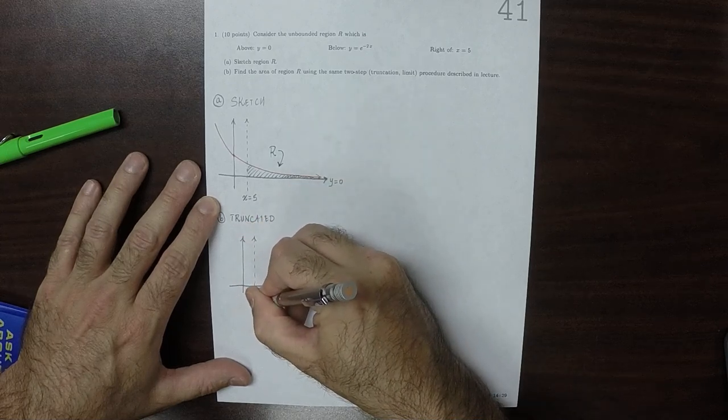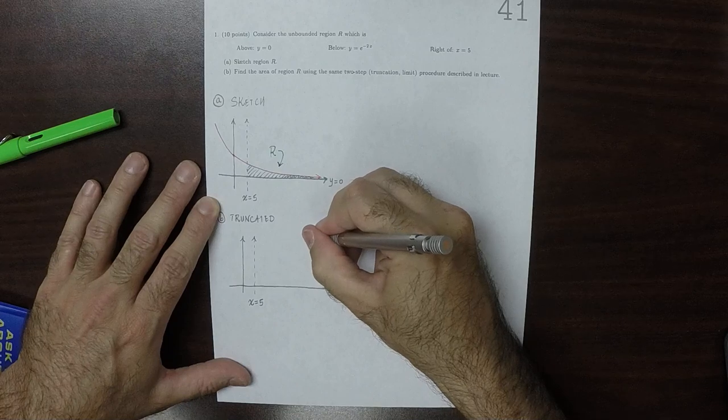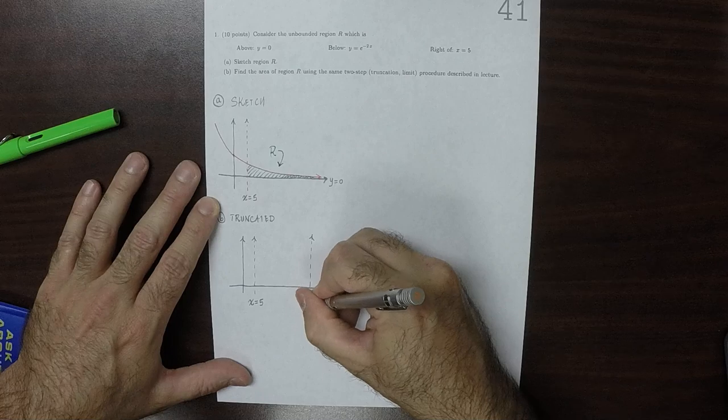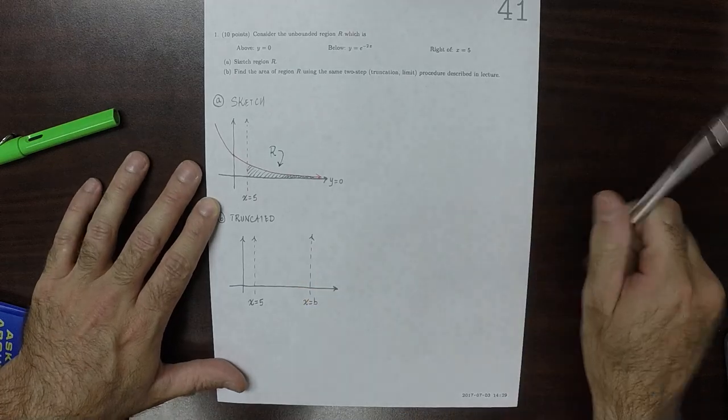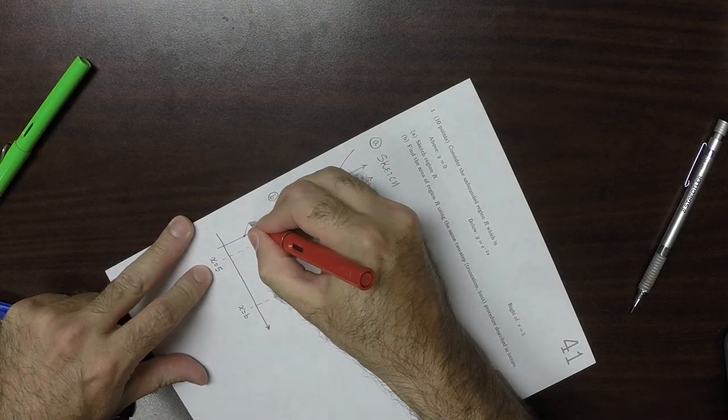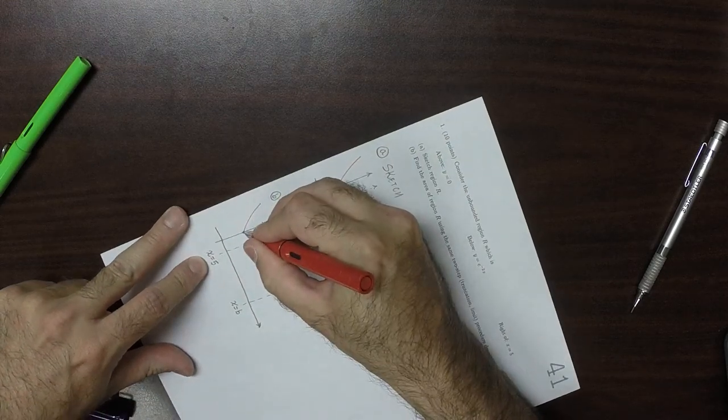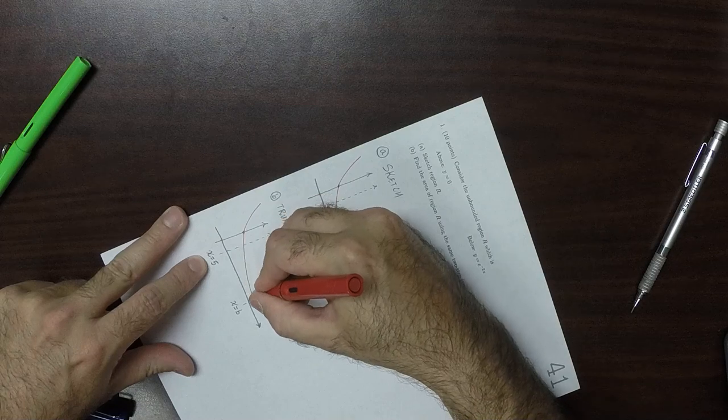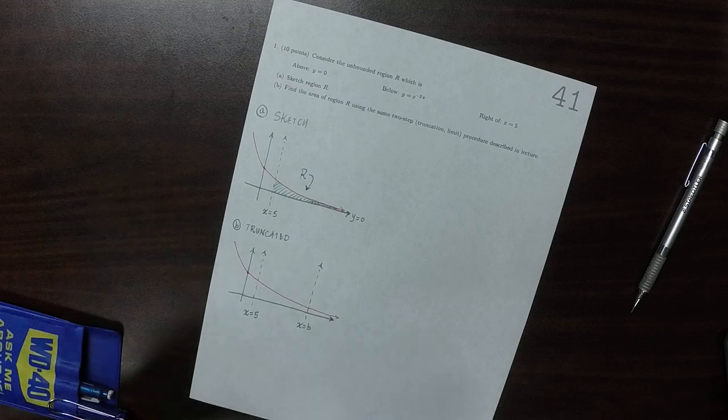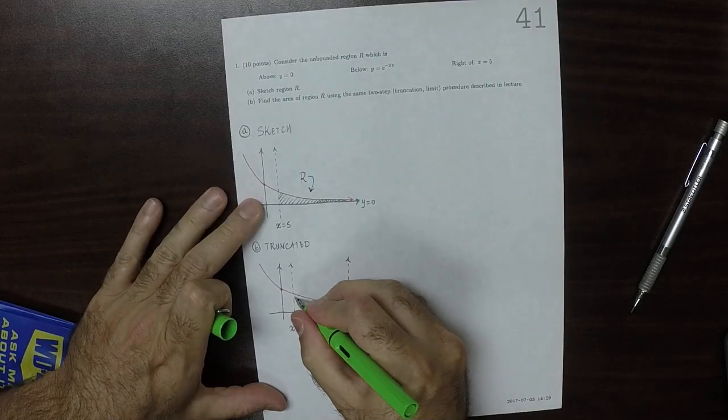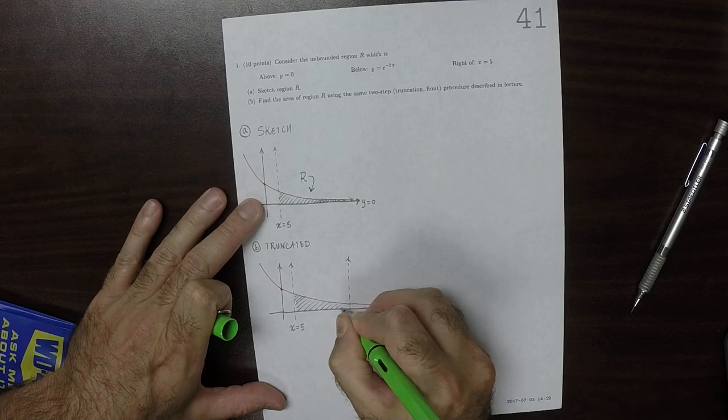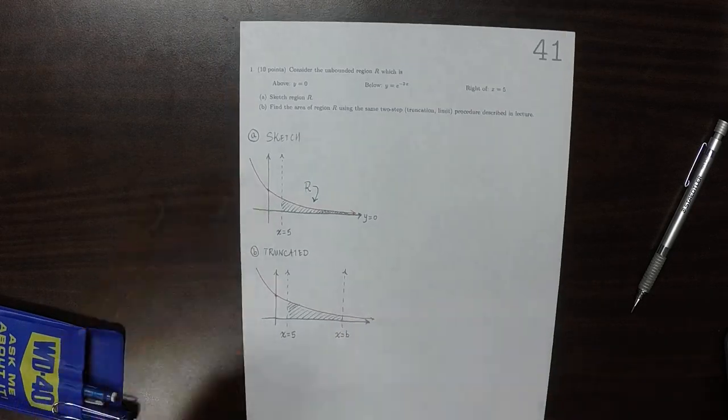From x is 5 over to some finite location, x is B, where B is something more than 5. We're going to consider this region. So this region is bounded.